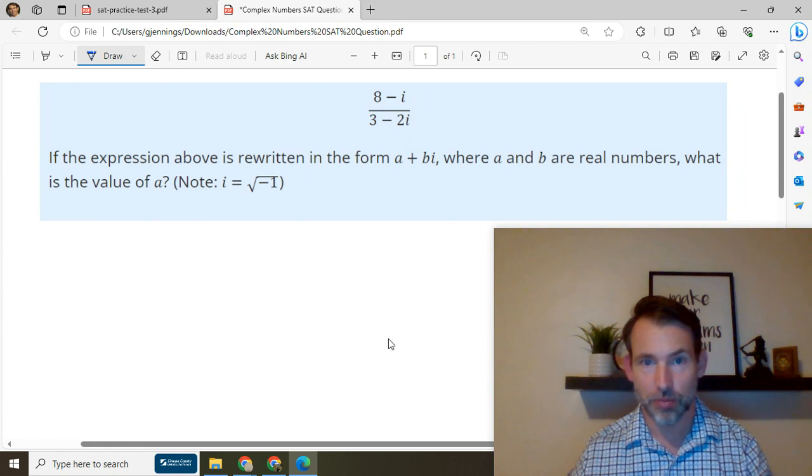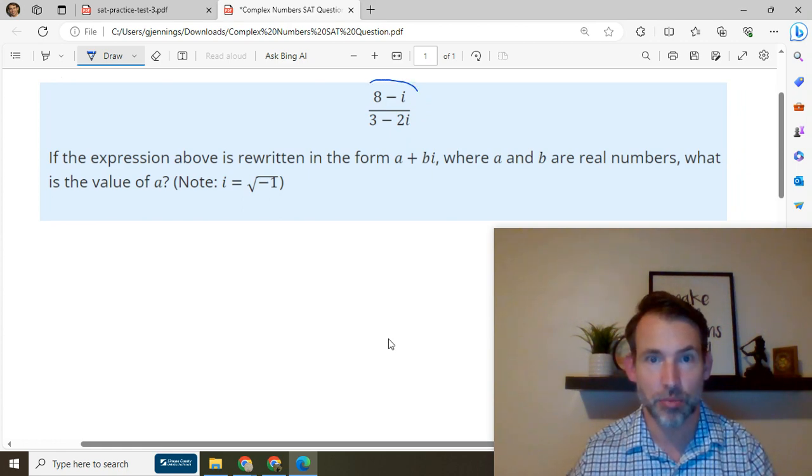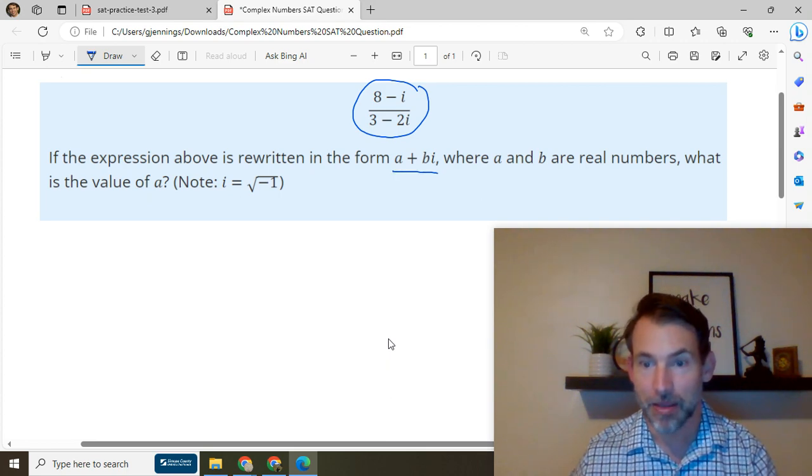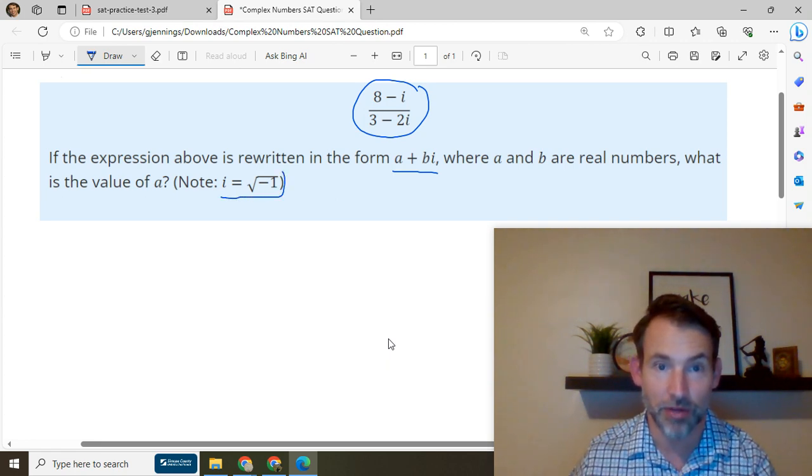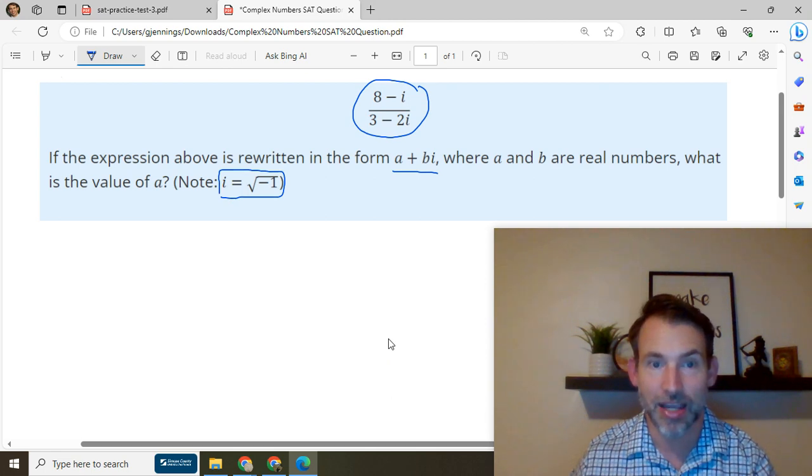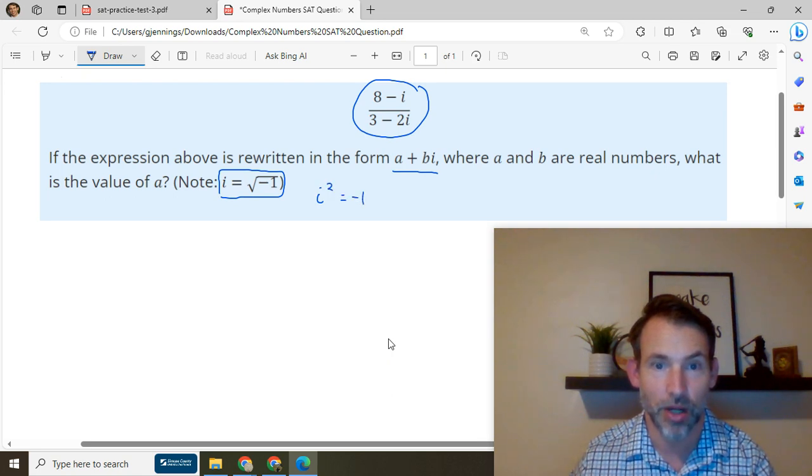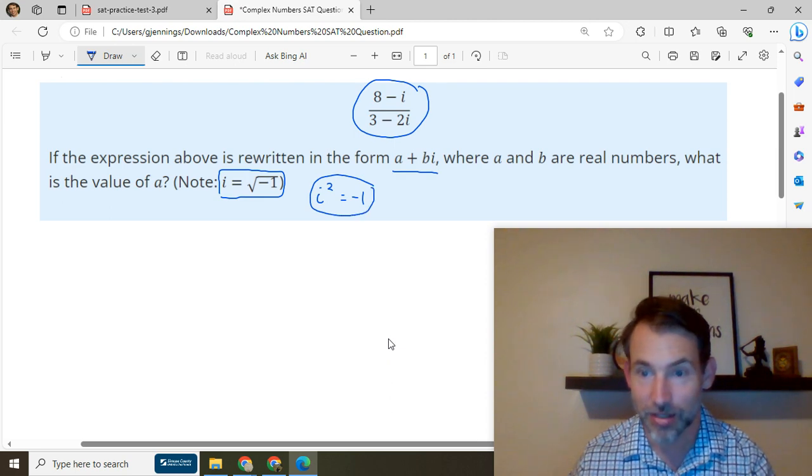So what we've been asked to do is take this expression here and rewrite it in the form a plus bi. But i is a very special number in math, and it's a number that introduces a whole new set of numbers, the complex numbers. And i is equal to the square root of negative one. So another identity that this gives us is that i squared is equal to negative one. And we're going to see that this fact about i is very useful in this problem.